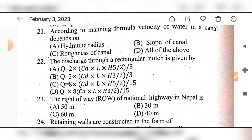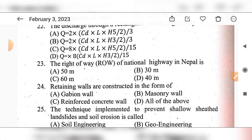Question 23: The right of way (ROW) of a national highway in Nepal is — option A: 50 meters, option B: 30 meters, option C: 60 meters, option D: 40 meters. The answer is option A: 50 meters.